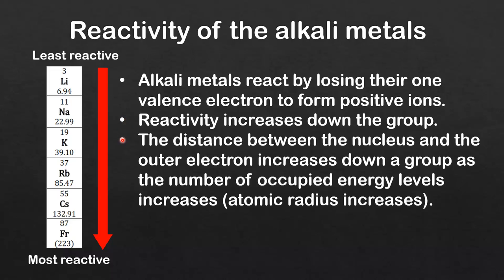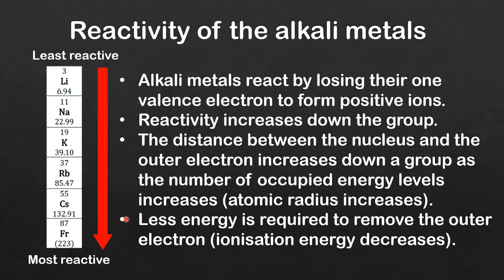The distance between the nucleus and the outer electron increases down the group as the number of occupied energy levels increases. So that means the atomic radius increases down the group. Therefore less energy is required to remove the outer electron.